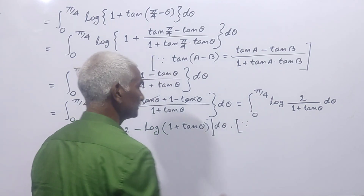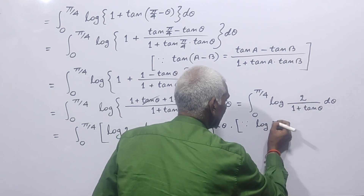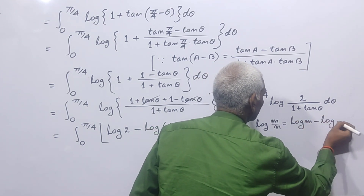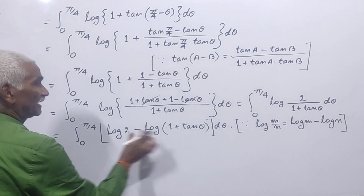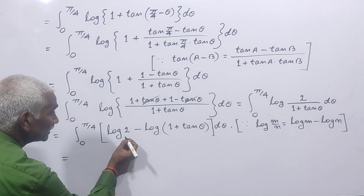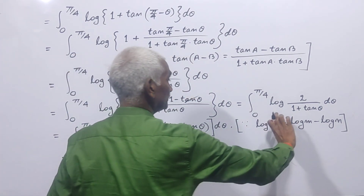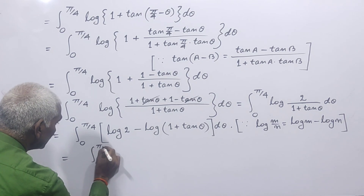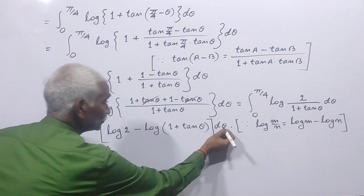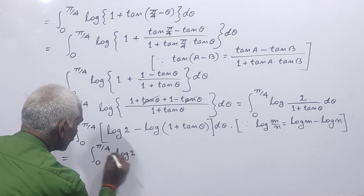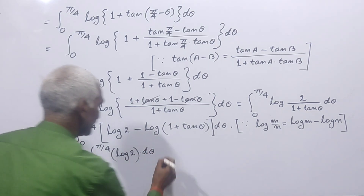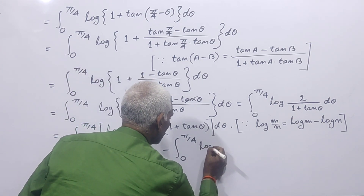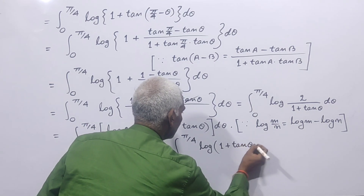For simplification, we use the property: log(m/n) = log m − log n. Applying this, log(2/(1 + tan θ)) = log 2 − log(1 + tan θ). So the integral splits into: integral from 0 to π/4 of log 2 dθ minus integral from 0 to π/4 of log(1 + tan θ) dθ.